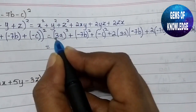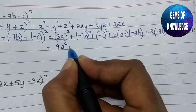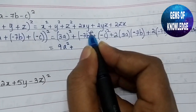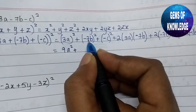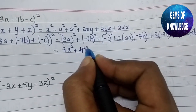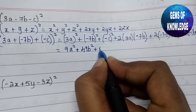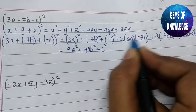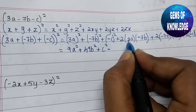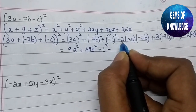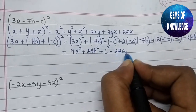Opening: (3a)² = 9a², (−7b)² = 49b², (−c)² = c². Then 2·3a·(−7b) = −42ab, 2·(−7b)·(−c) = +14bc, and 2·(−c)·3a = −6ca. So the result is 9a² + 49b² + c² − 42ab + 14bc − 6ca.